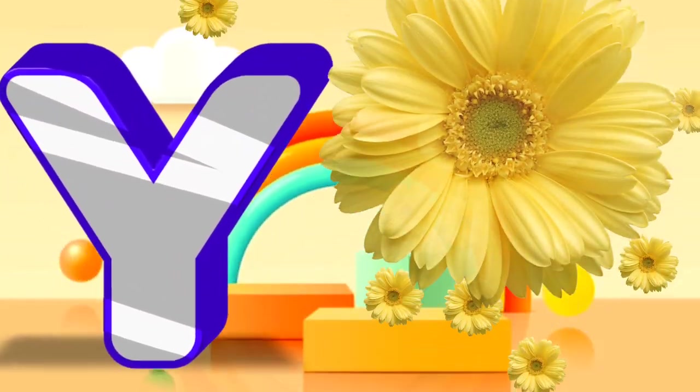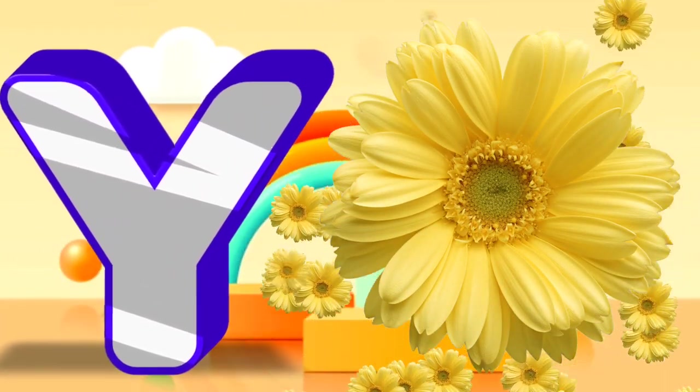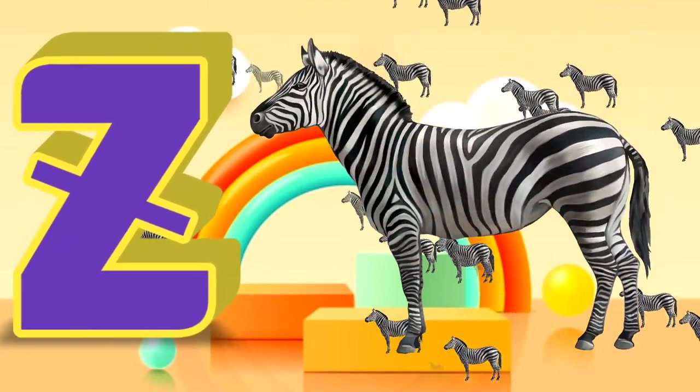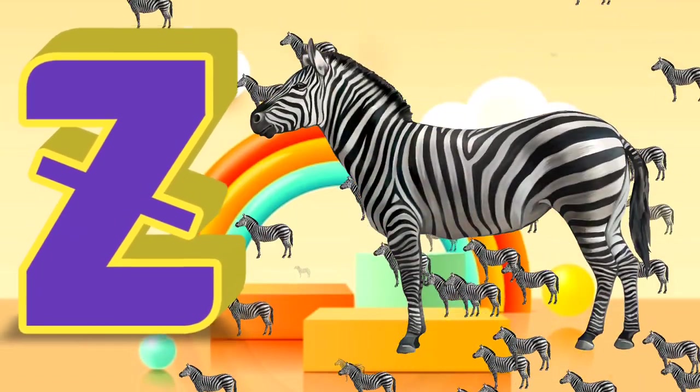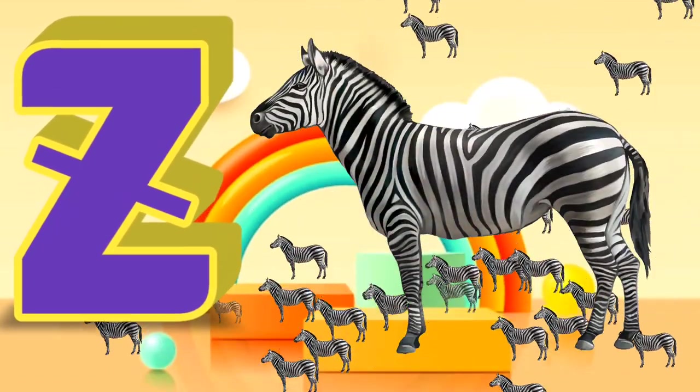Y is for yellow, ye-ye-yellow. Z is for zebra, z-z-zebra.